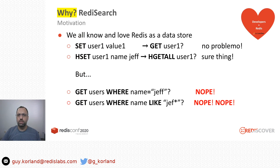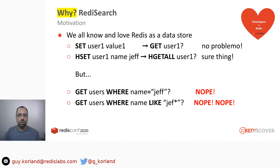Why do we need Redis Search? We all love Redis. Redis is a great data store, it's really easy to use — easy to store a key and a value and then just get the value. You can even store a hash with tuples of key and values and easily retrieve it. But what if you want to run more complex queries, like find all users whose name is Jeff, or find all users whose name starts with the word Jeff? That's not an easy answer in Redis. There are patterns for that, but there is no built-in solution straight from the box.